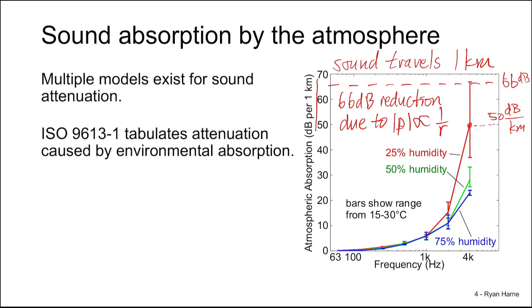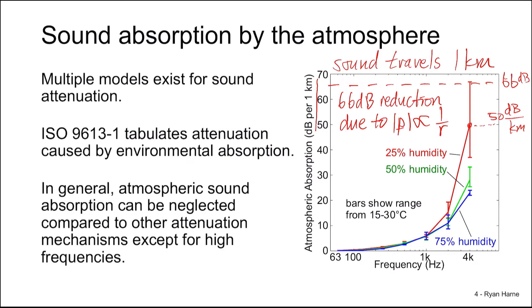So in other words, the spherical spreading alone results in 66 dB attenuation, which is substantially more than 50. Although 16 dB doesn't sound much in a relative sense, remember that it's a logarithmic scale. So a 16 dB change is nearly an order of magnitude reduction. So in general, we neglect atmospheric sound absorption in our models, unless we're dealing with very high frequencies, such as the upper limits of human hearing and ultrasonic frequencies.